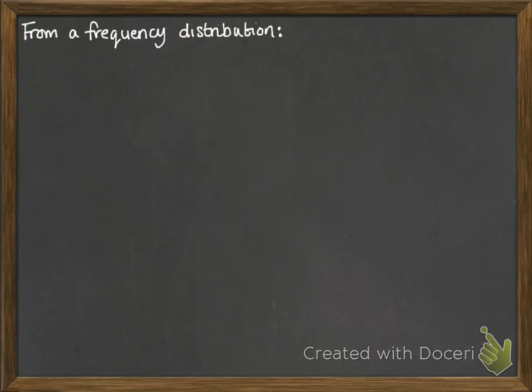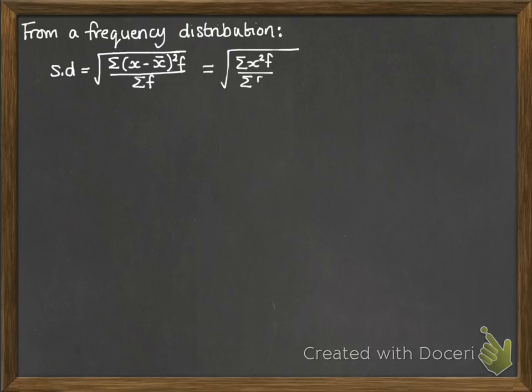We can do the same things if we have our information as a frequency distribution. So if it's summarized in a table, you need to know how to unpack the information from there. So the standard deviation this time we'll be doing it times by the frequencies. Like you did for working out the mean from a frequency table. If you don't remember how to do that, just look at the previous video.